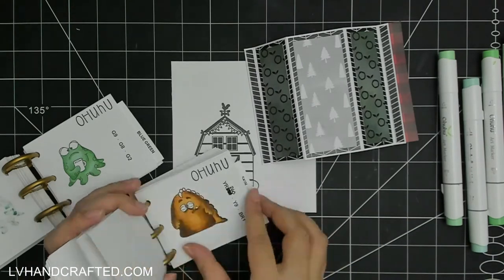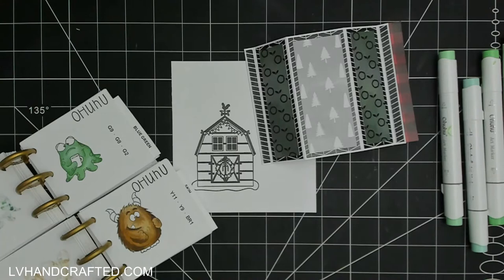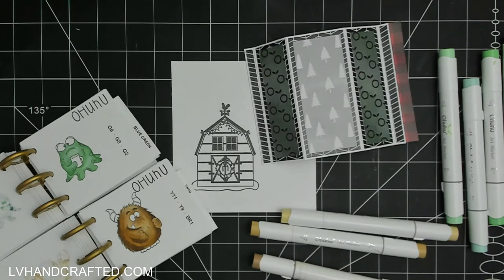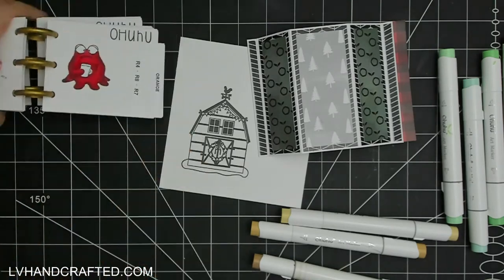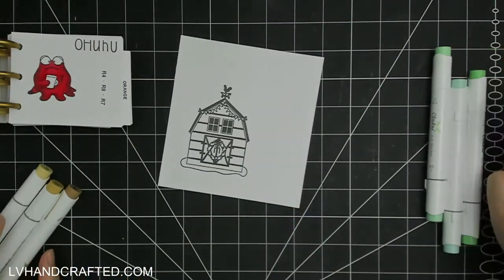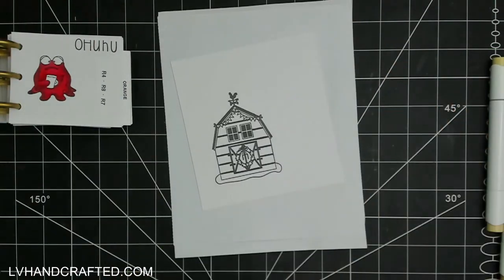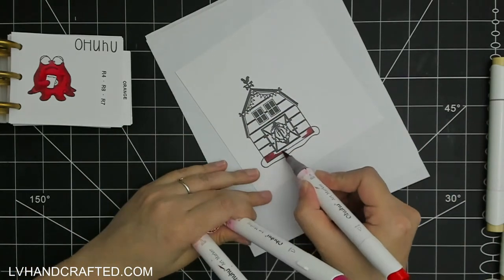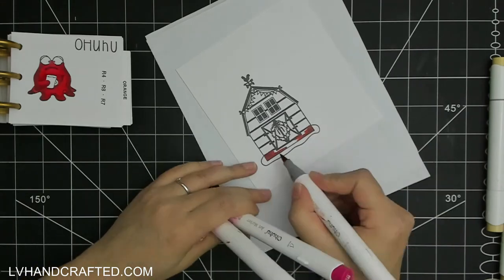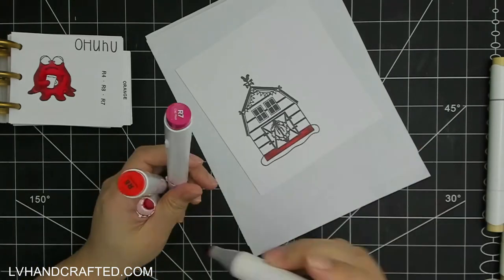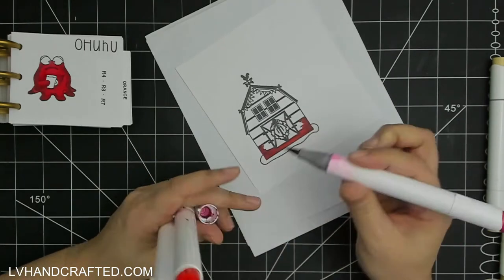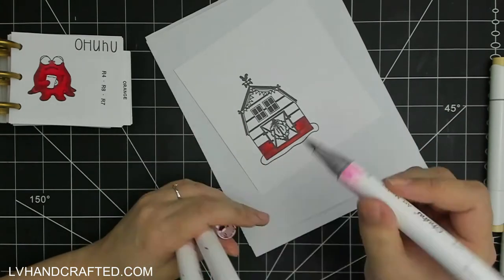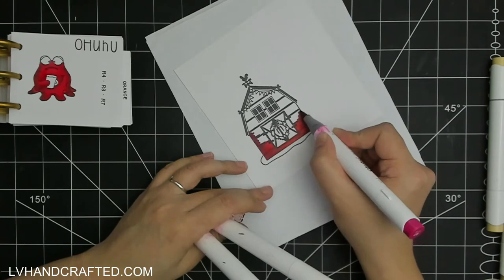It did take a bit of time to re-swatch all of my colors because I just wanted a more fun swatch book, and I've got these monster stamps that are kind of fun to color up. So I just stamped out a bunch of them and colored them in some of my favorite color combinations. I primarily use Ohuhu markers.